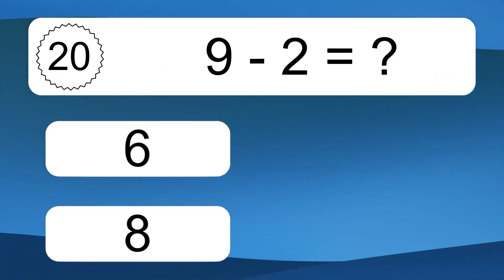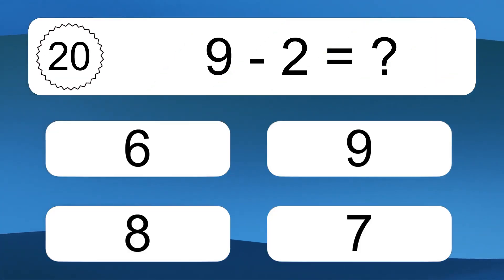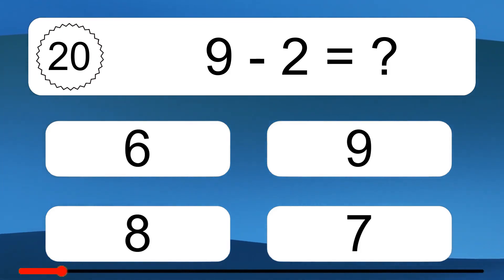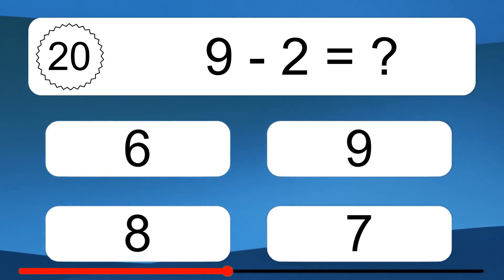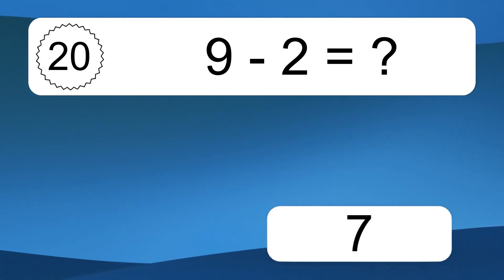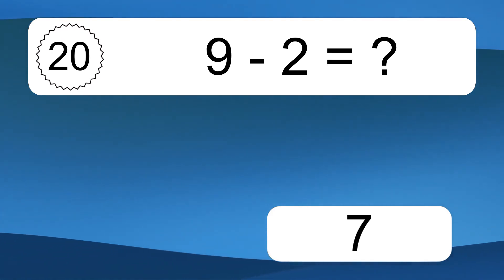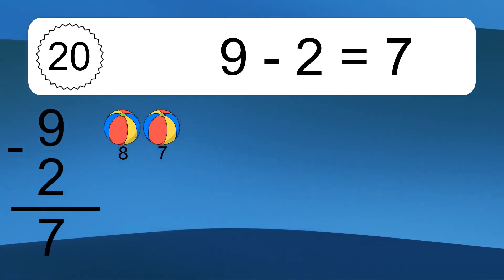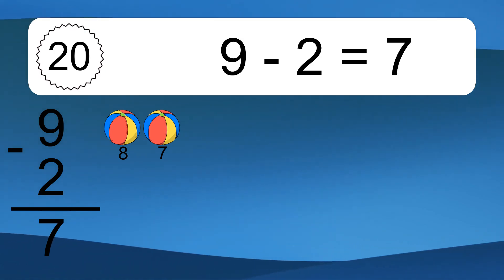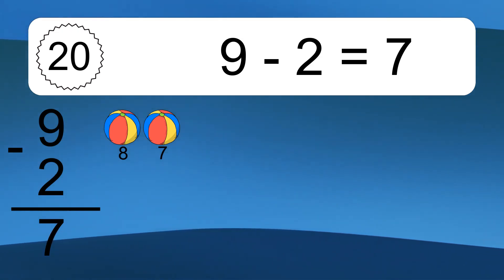9 minus 2 equals what? 9 minus 2 equals 7. Let's count it: 8, 7.